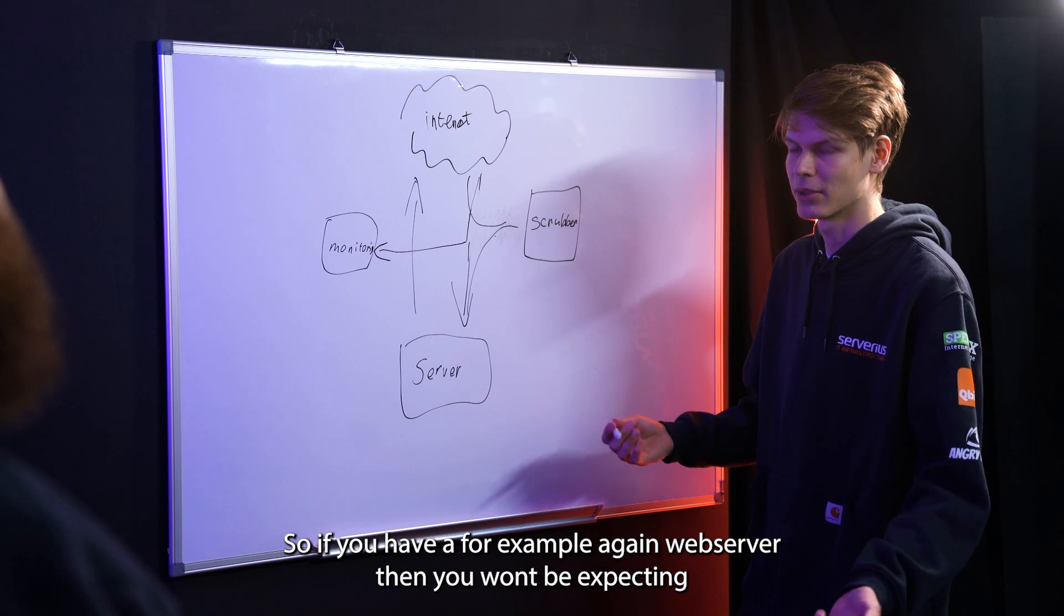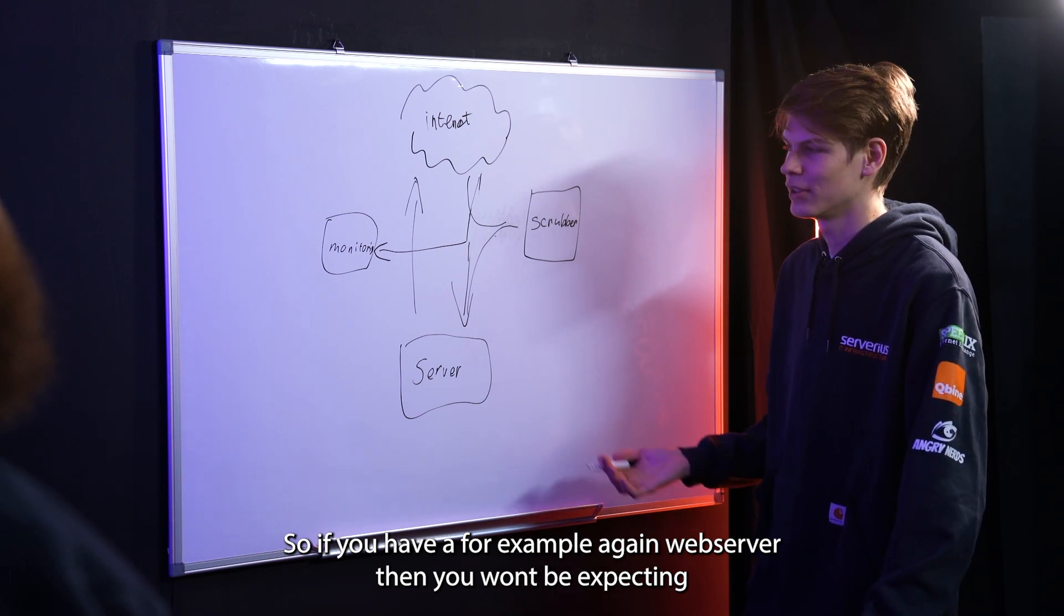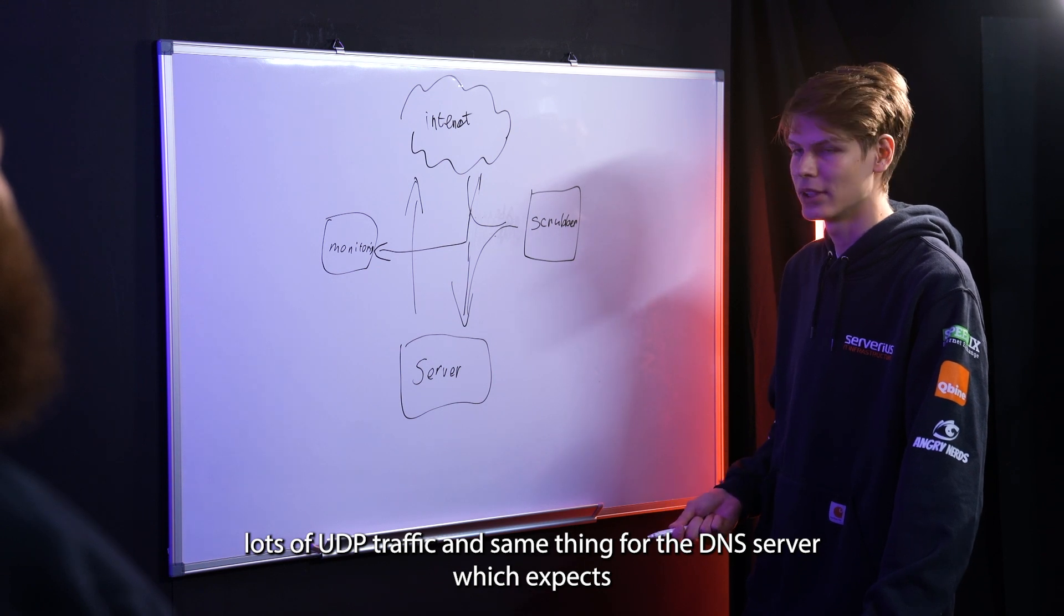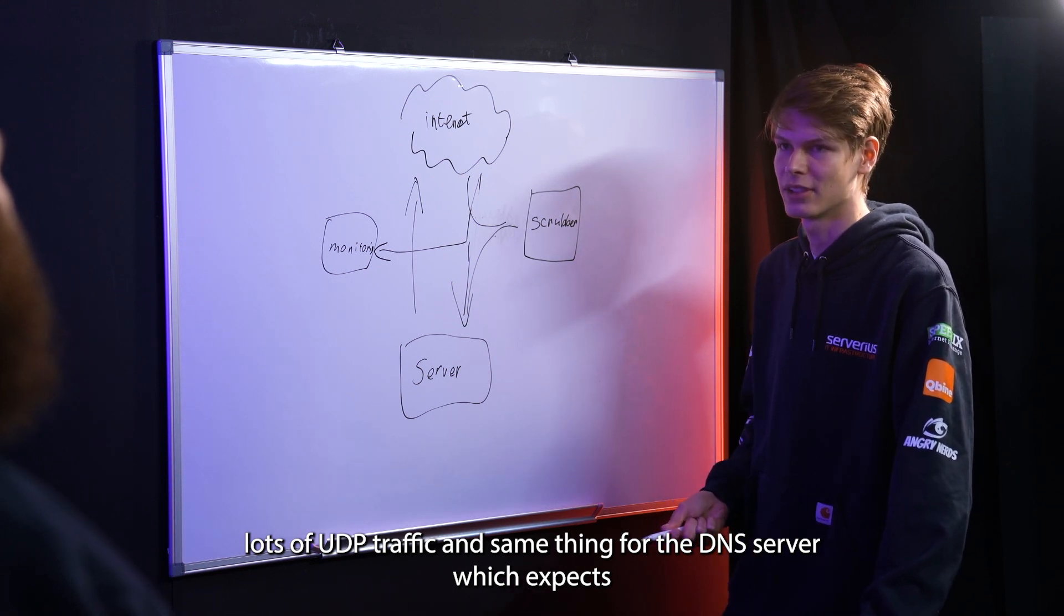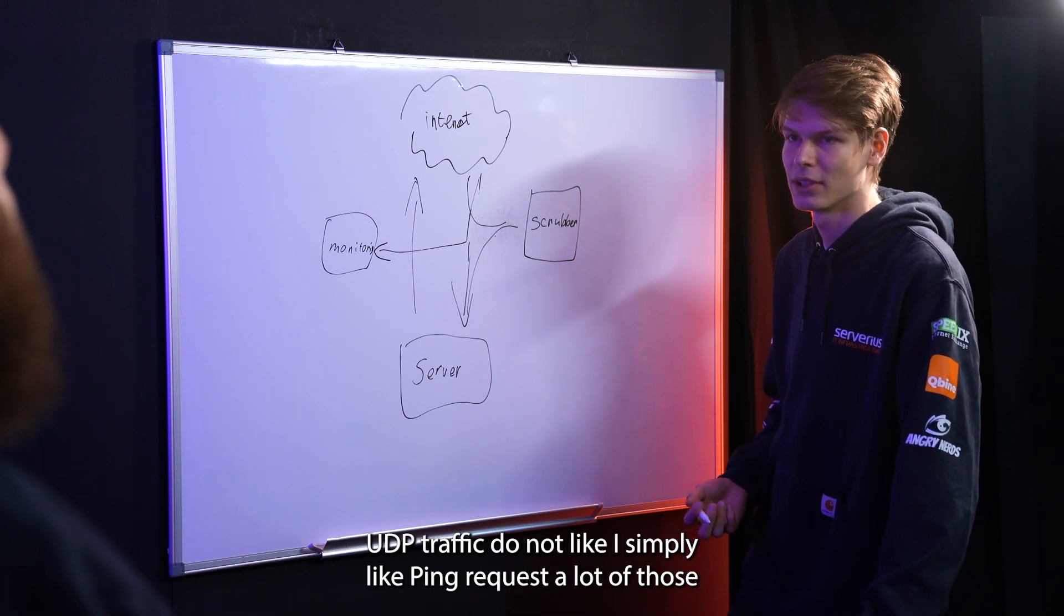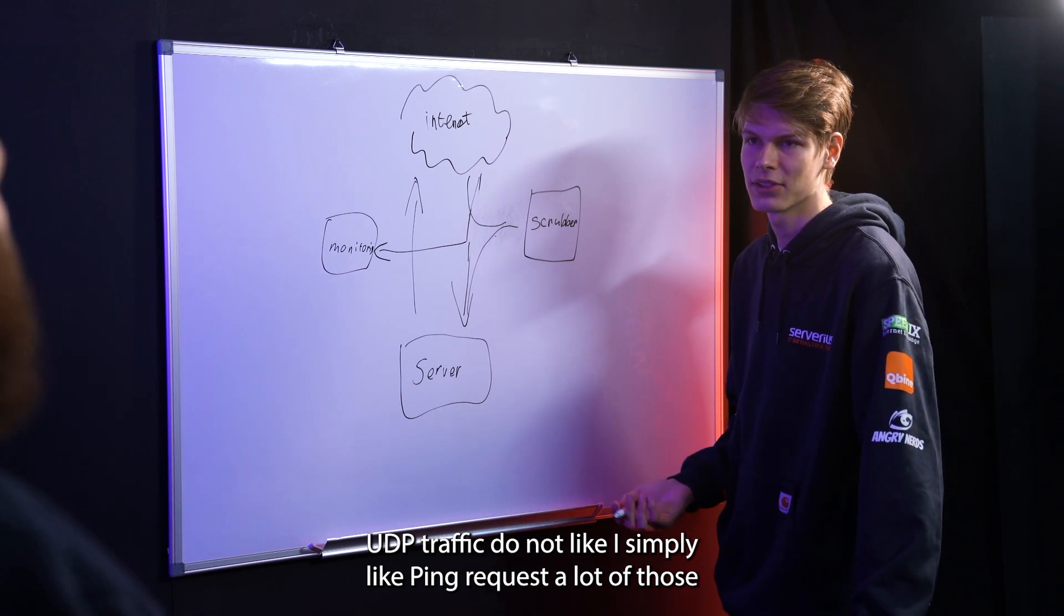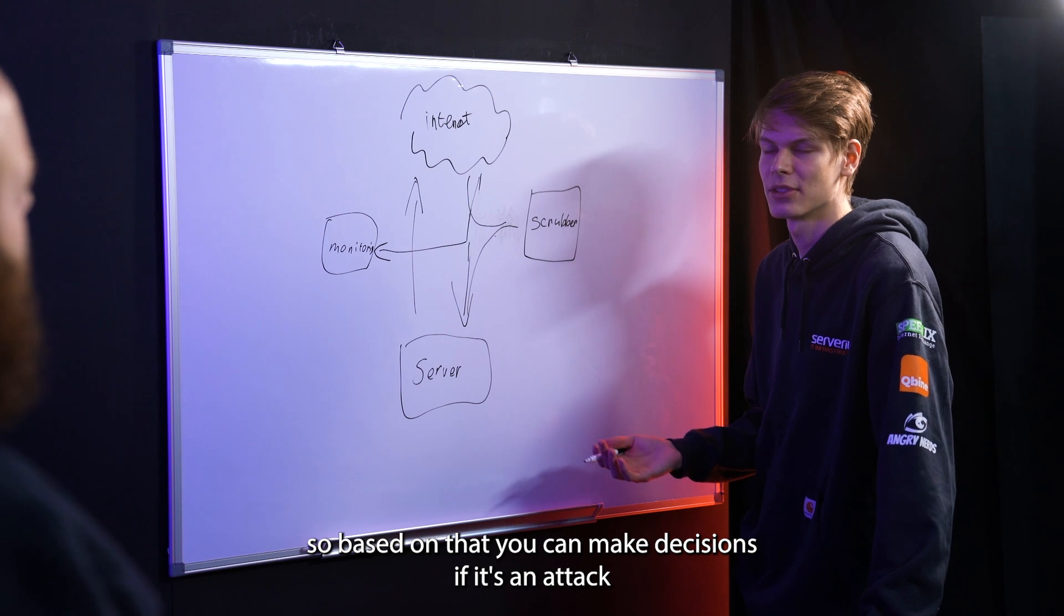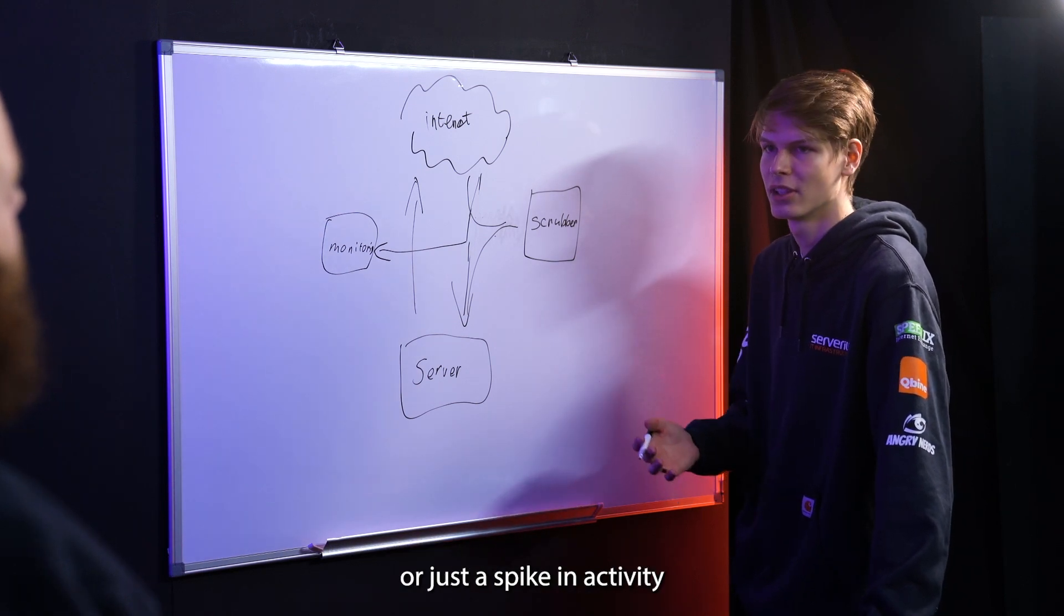So if you have a web server, for example, then you won't be expecting lots of UDP traffic. And same thing for a DNS server, which expects UDP traffic but not ICMP, like ping requests, a lot of those. So based on that, you can make decisions if it's an attack or just a spike.